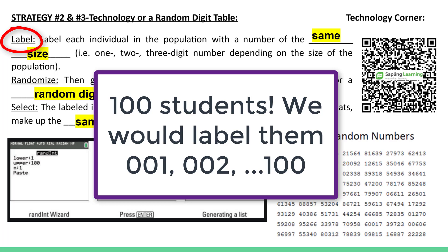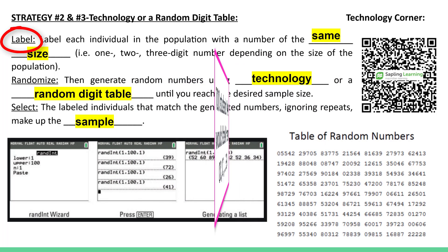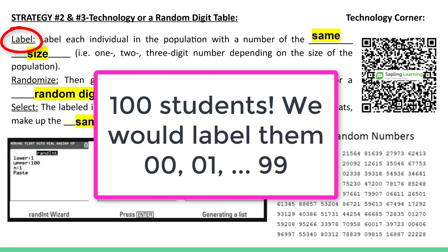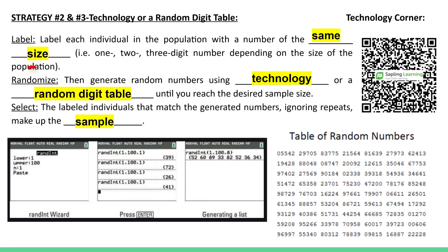Actually, with 100 students, you could label your first student as 00 and your last student as 99 — that would be completely acceptable. So keep in mind, when you're labeling with 2 or 3 digits, you can use 00 as one of your 2-digit numbers. Next, we would randomize. If we're using technology, we would use our random integer generator, and we'll go over an example of that later.